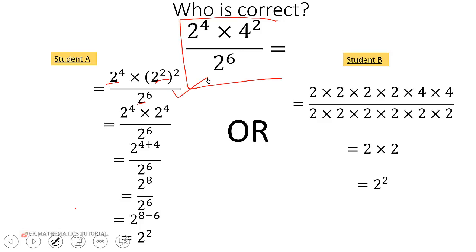Then the second one started by using the definition of indices. A exponent n means a times itself n times. So that one too is not wrong, it's correct.